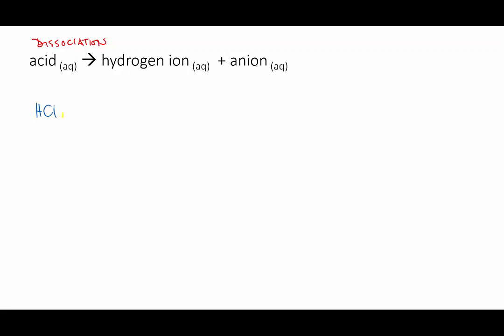For instance, hydrochloric acid will dissociate to give a hydrogen ion, which is positive, and a chloride ion, which is negative.